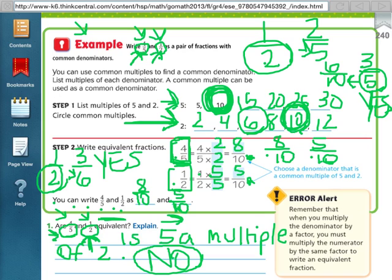Okay, so that is lesson 6.4. I hope you understand now how to write fractions with common denominators and how to tell if two fractions are equivalent. If you have any questions, please leave me a message. Thank you.